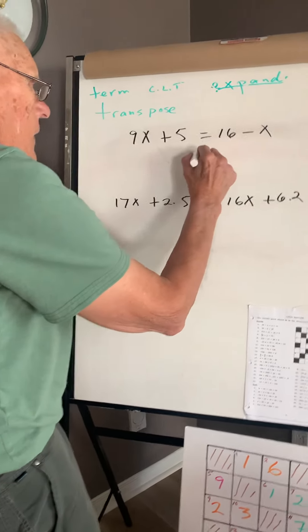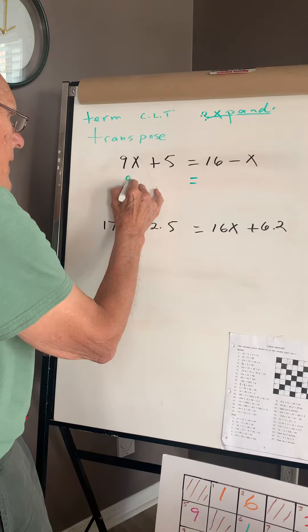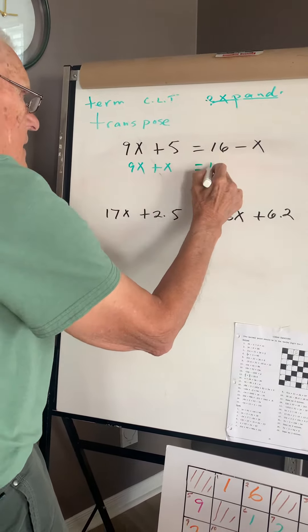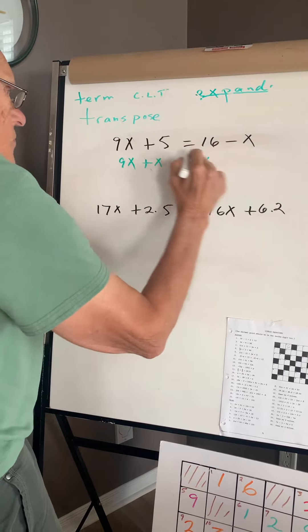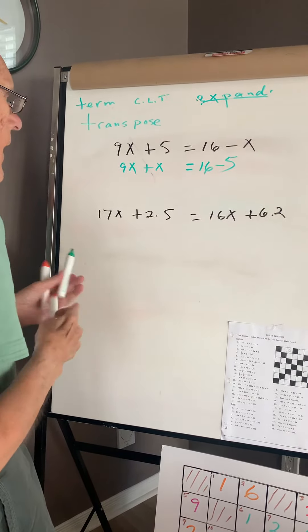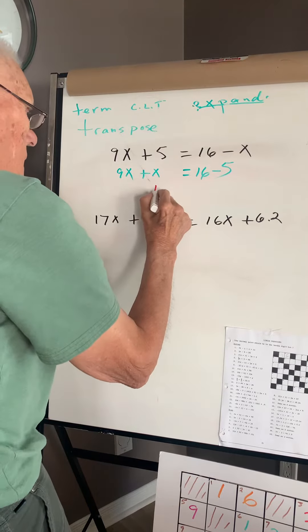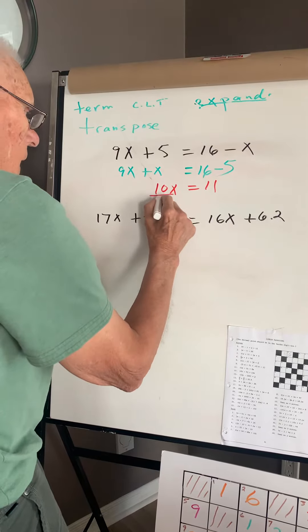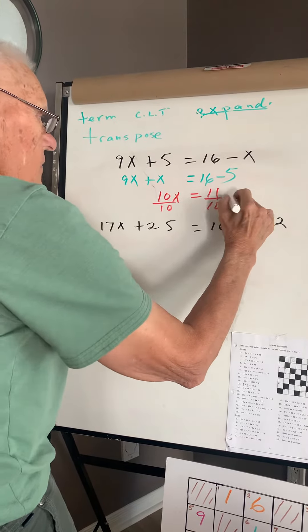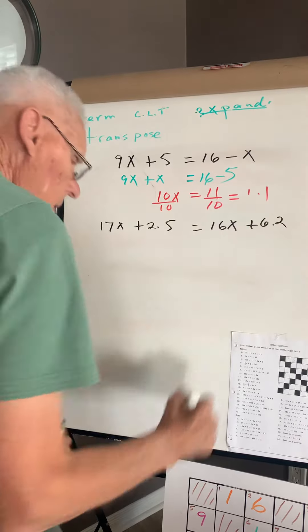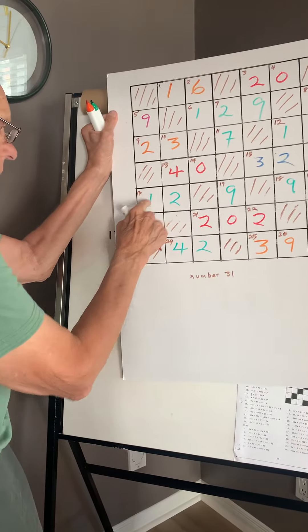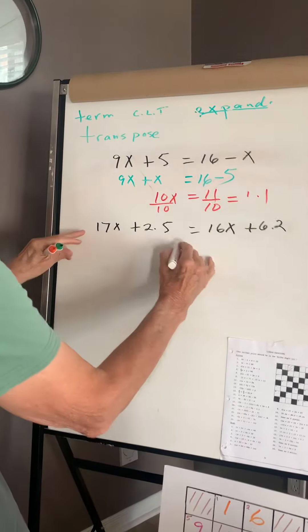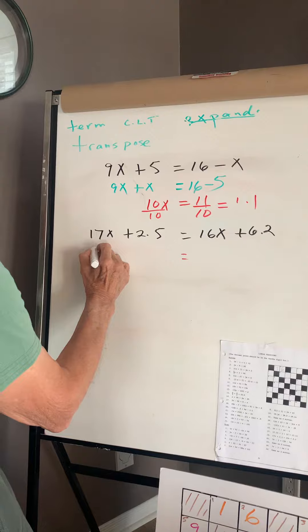So the first one over here, we're going to see if it works out. 9x plus 5 equals 16 minus x. Transpose, now this is going to be 10x is equal to 11. Divide by 10 and this is going to be 1.1, which is 1.1. Check.